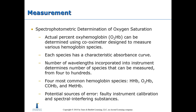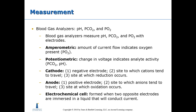Blood gas analyzers measure pH, pCO2, and pO2 with electrodes. Amperometric measurement: the amount of current flow indicates oxygen present. Potentiometric measurement: the change in voltage indicates analyte activity, used for pCO2 and pH. A cathode is the negative electrode — the site to which cations tend to travel and where reduction occurs. An anode is the positive electrode — the site to which anions tend to travel and where oxidation occurs. An electrochemical cell is formed when two opposite electrodes are immersed in a liquid that conducts current.